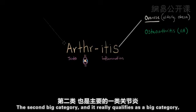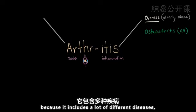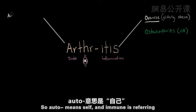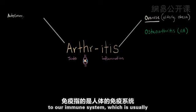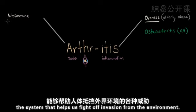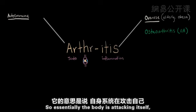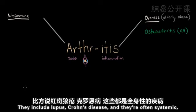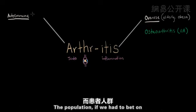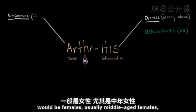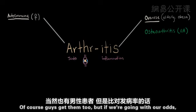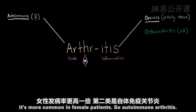The second big category includes a lot of different diseases: autoimmune. 'Auto' means self, and 'immune' refers to our immune system, which usually helps us fight off environmental invaders. Essentially, the body is attacking itself. Famous diseases in this category include lupus and Crohn's disease, and they're often systemic, meaning they affect many parts of the body. The population most likely to have these diseases would be females, usually middle-aged, though men get them too.